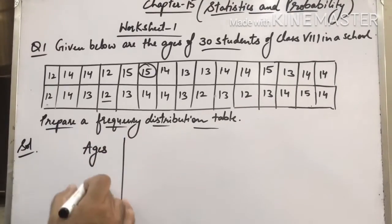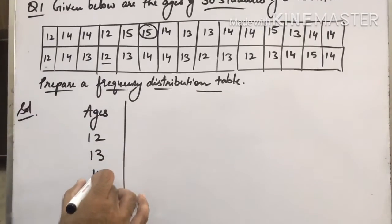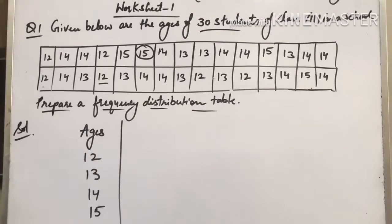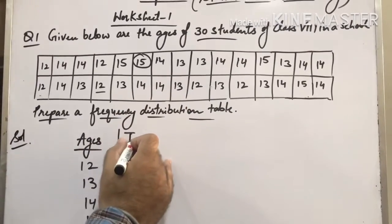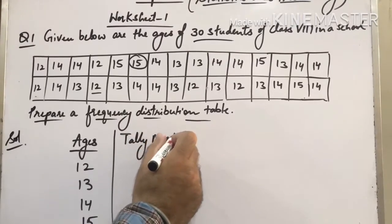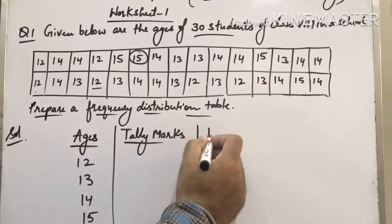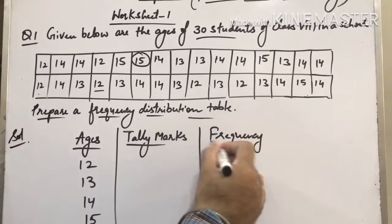For the frequency distribution table, what does the next column make? Tally marks. Then the third column will be frequency, that is the number of times that particular age is repeated. Now make the tally marks.